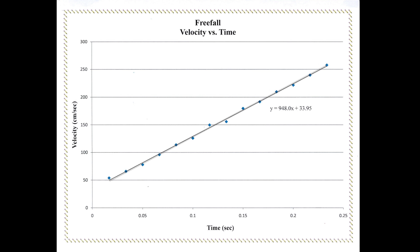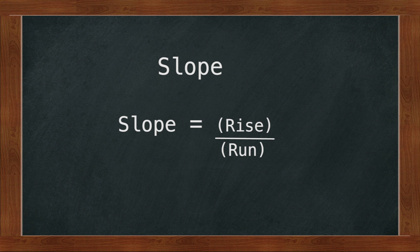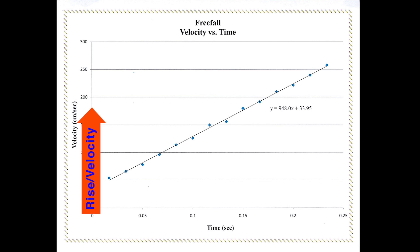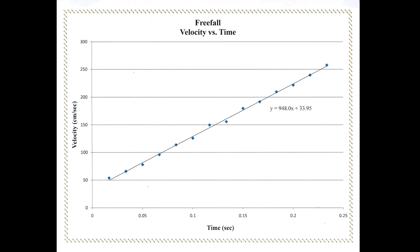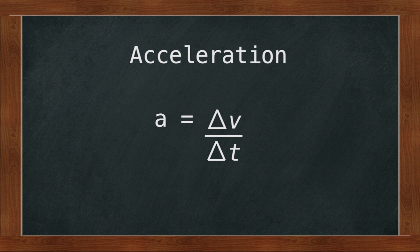Now we are ready to calculate the acceleration due to gravity. We will take the slope of our trend line. Most of you probably know that a slope represents the rise over the run. The rise is the y-axis, upon which we have plotted velocity. The run is the x-axis, where we have plotted the elapsed time. This means that our slope is a representation of change in velocity over change in time, which is the definition of acceleration. Acceleration equals delta v over delta t.